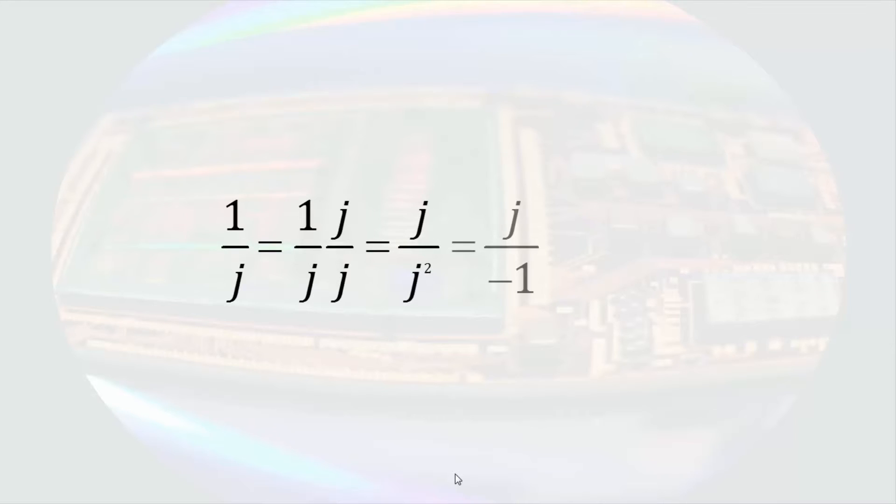This is equal to j over j squared, which is the same as j over negative 1, or simply negative j. That covers the behavior of the imaginary number when it's alone.